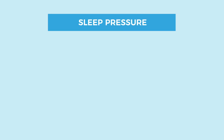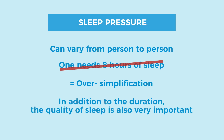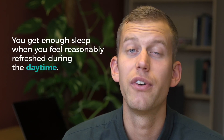Our inner clock also has a built-in need for sleep called your sleep pressure, which can vary from person to person. The common perception that one needs eight hours of sleep is an oversimplification — some can cope with six hours while others need eight just to get through a normal day. In addition to duration, the quality of sleep is also very important in regulating sleep pressure. The simplest principle is that you get enough sleep when you feel reasonably refreshed during daytime.